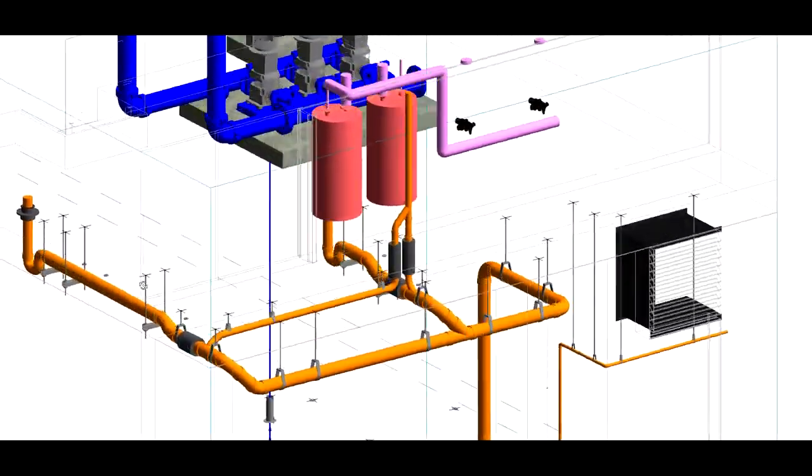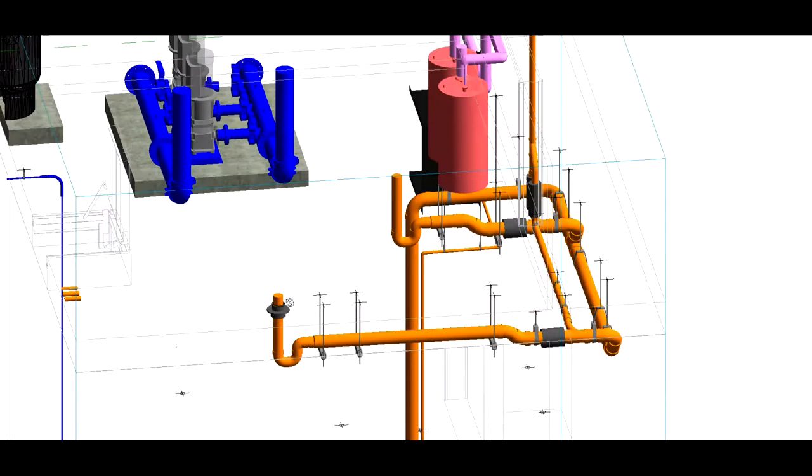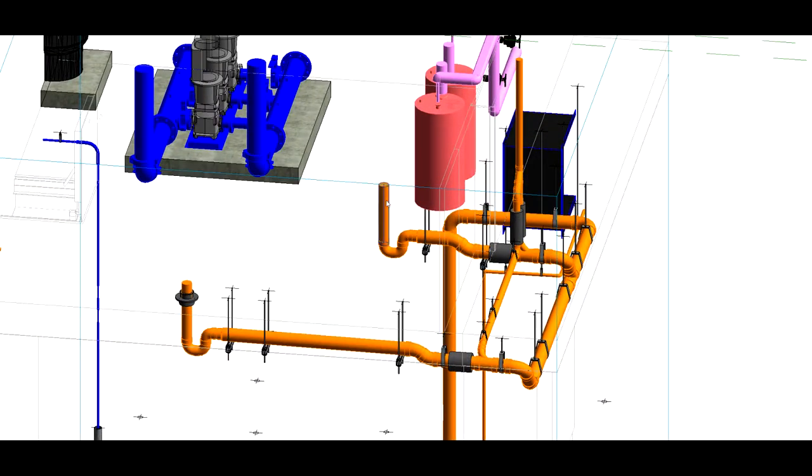So here's the drains in the fire tank. We moved the water heaters over. This is a floor sink for some reason, not showing up. Here's our floor drain.